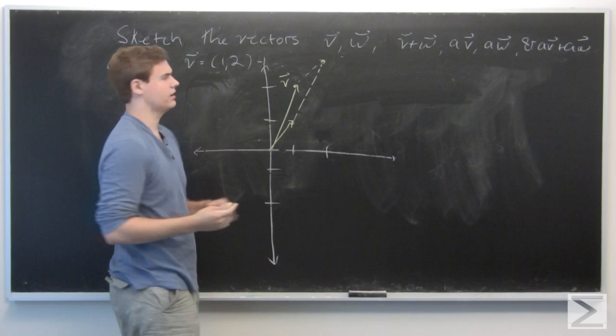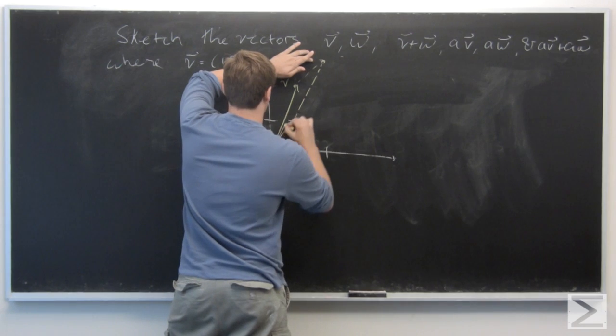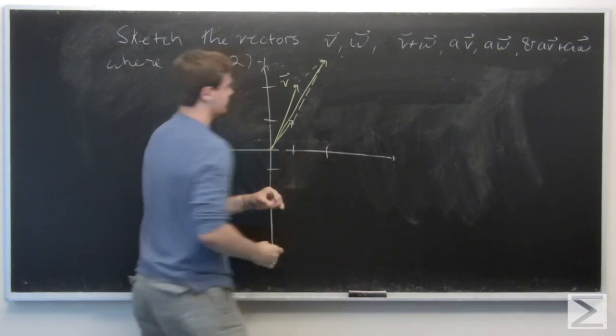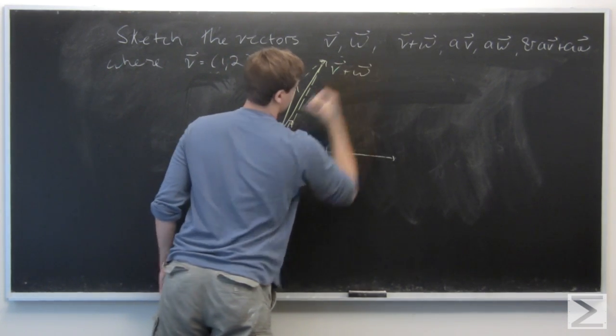And then we include a solid line from the origin to this point. And we label that v plus w.